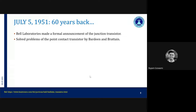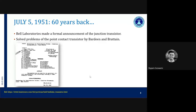Prior to the junction transistor, there was the point contact transistor developed by Bardeen and Brattain, and at that time Shockley was not in the group — he joined later while inventing the junction transistor. Here are some very interesting snapshots: what you see on the screen is an invitation for a meeting by members of the scientific community at the time.